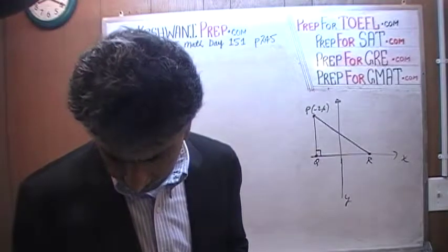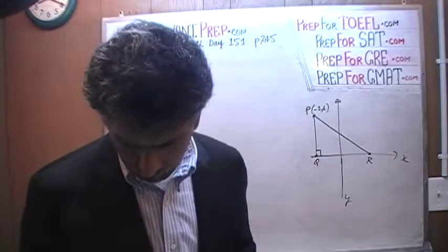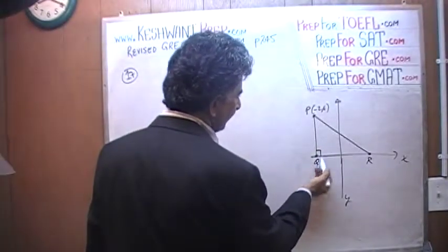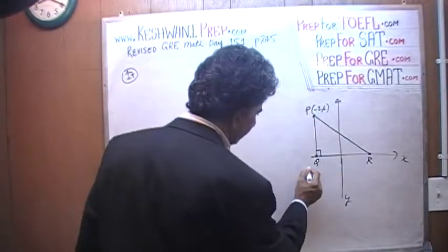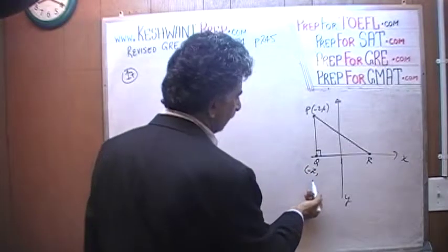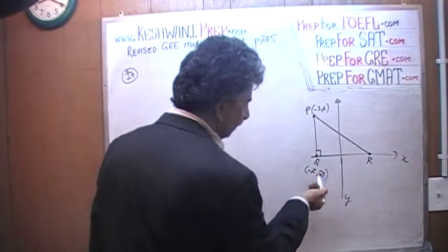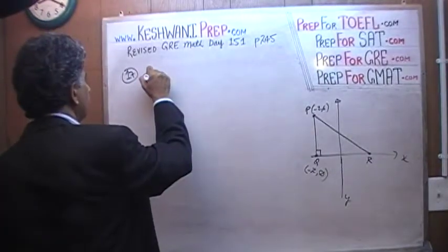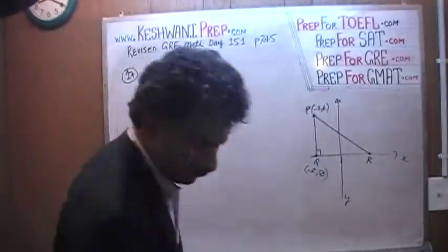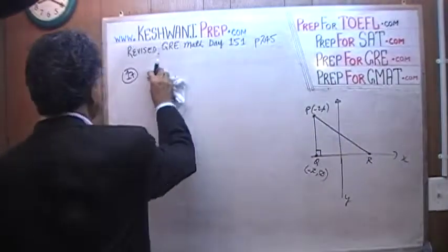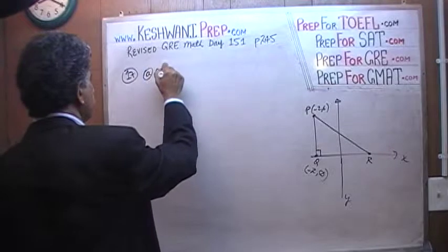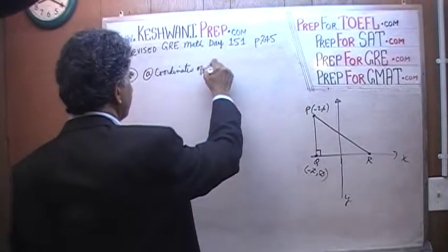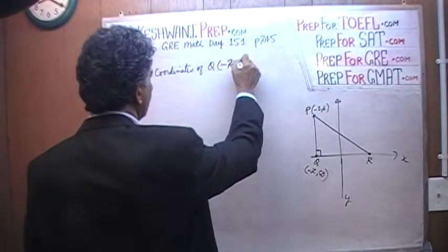The very first question is the coordinates of point Q. Point Q has the same X-coordinate as P, which is negative 2, and the Y-coordinate of Q is 0 because it's sitting on the X-axis. So coordinates of point Q is simply negative 2 and 0.